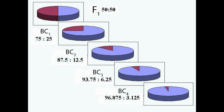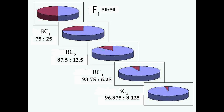This cycle of crossing backcross progeny to the recurrent parent continues until a new line that is identical to the recurrent parent but with the desired gene or trait from the donor parent is created. By the BC4 generation, the lines are greater than 96% identical to the recurrent parent. The backcrossing process can often be accelerated using marker-assisted backcrossing, also known as background selection.